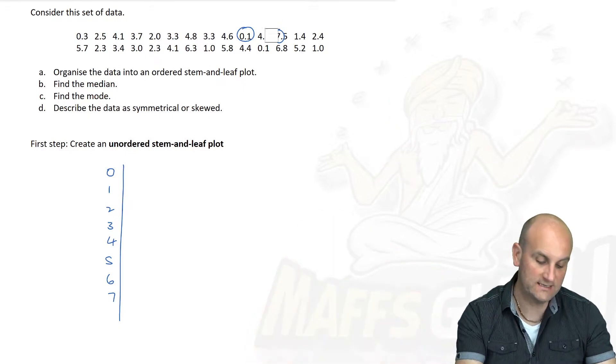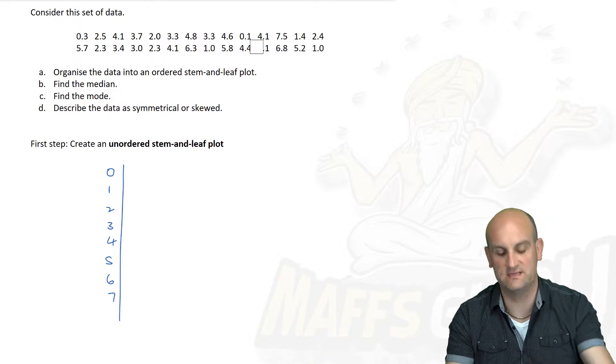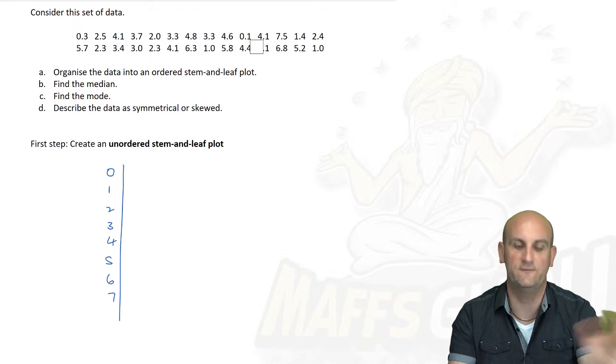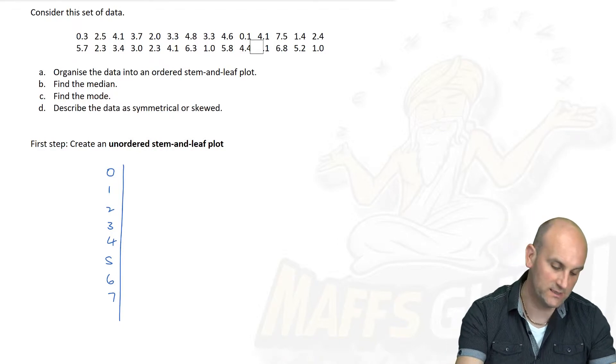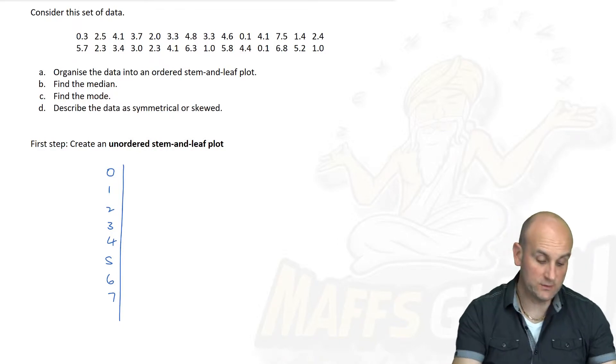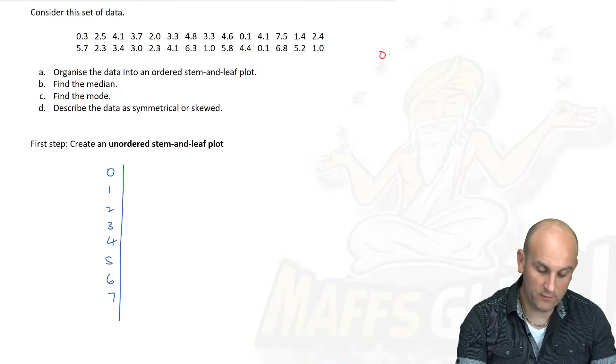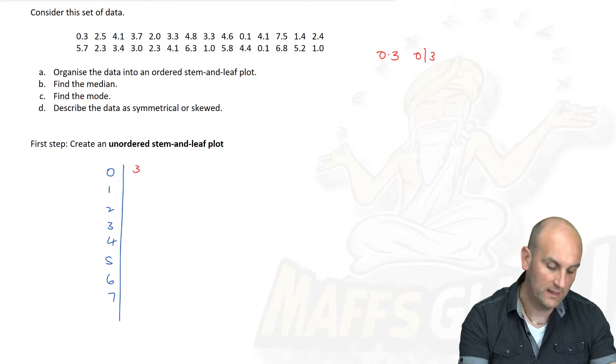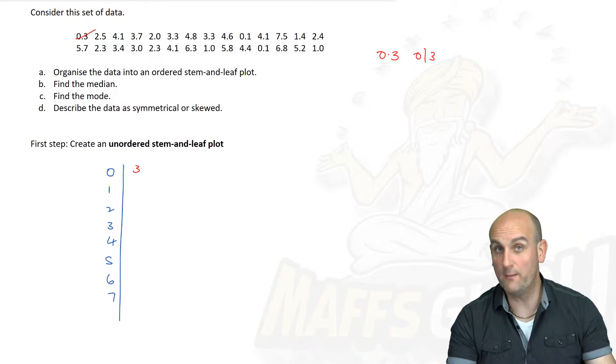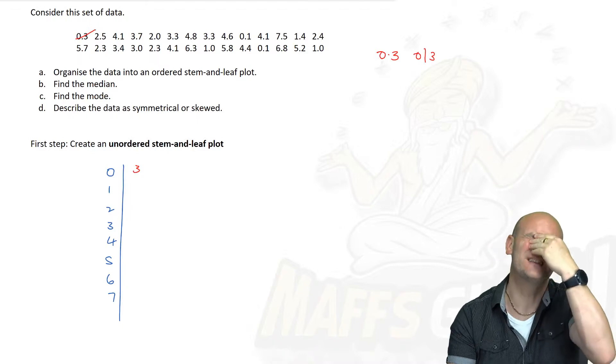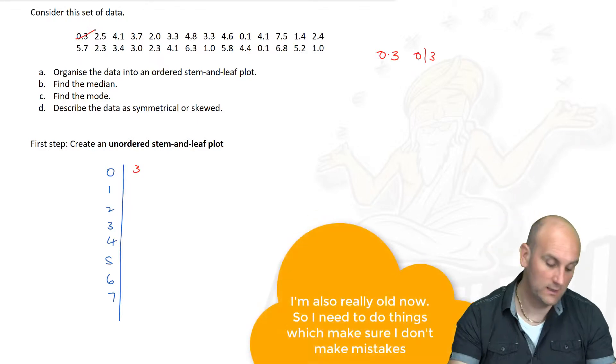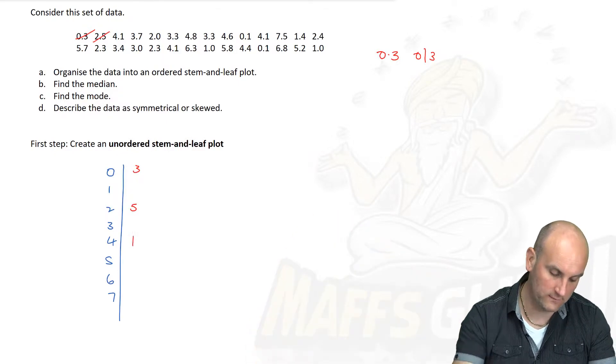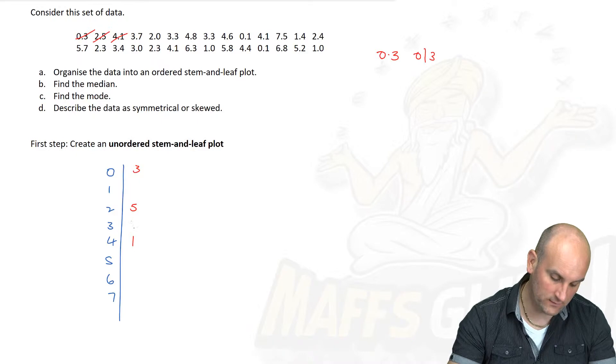What I'm going to do is take each of those individual numbers and transfer it into my Stem and Leaf Plot. I'm not going to do all of it. I'm going to do some of them, show you how to do it, and then fade away. The first thing we'll do is look at the number 0.3, which is 0 with a line and a 3. I'm going to put a 3 here. Then I'm going to cross it through.